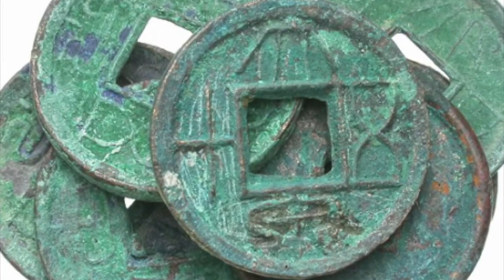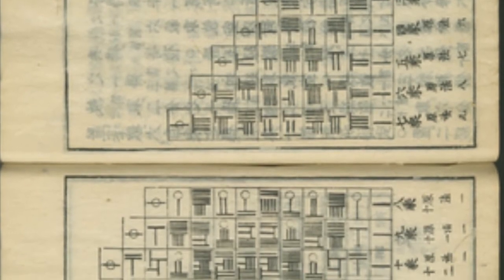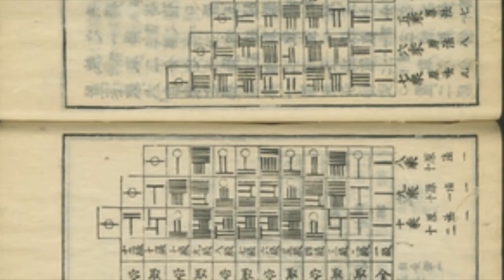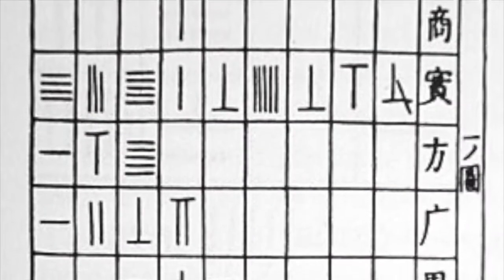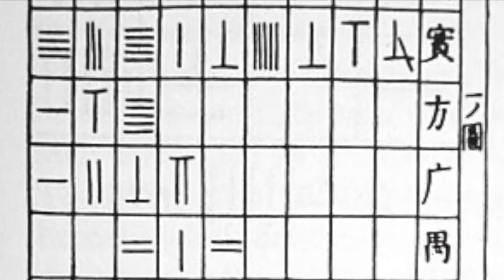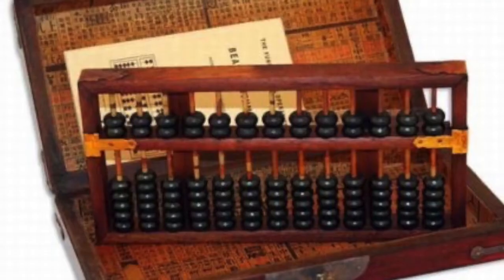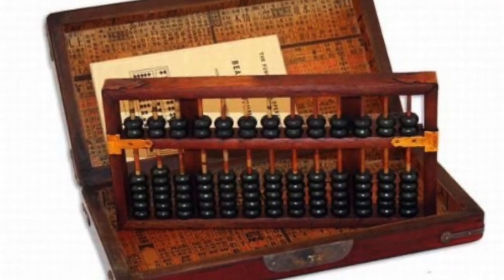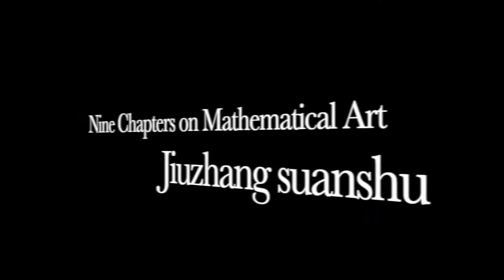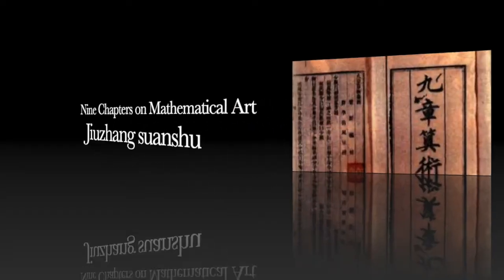By the fourth century BC, counting boards were used for calculating, which effectively meant that a decimal place-valued number system was in use. It is worth noting that counting boards are uniquely Chinese and do not appear to have been used by any other civilization.